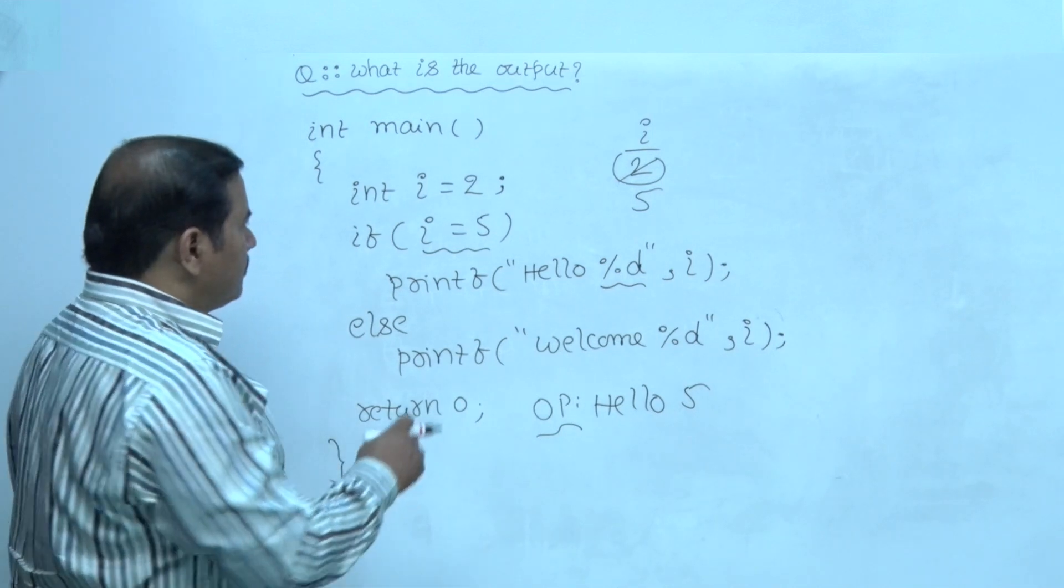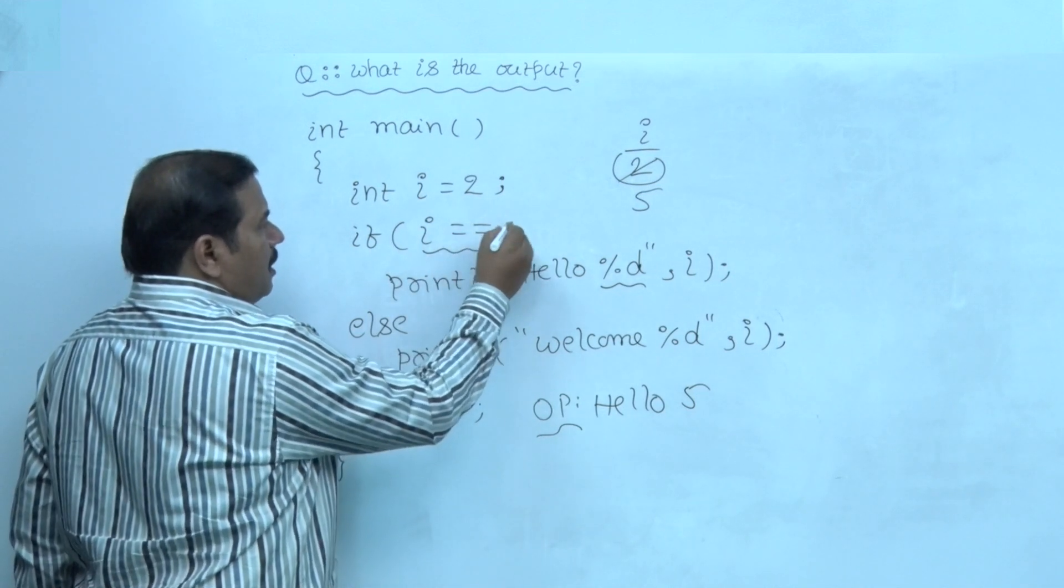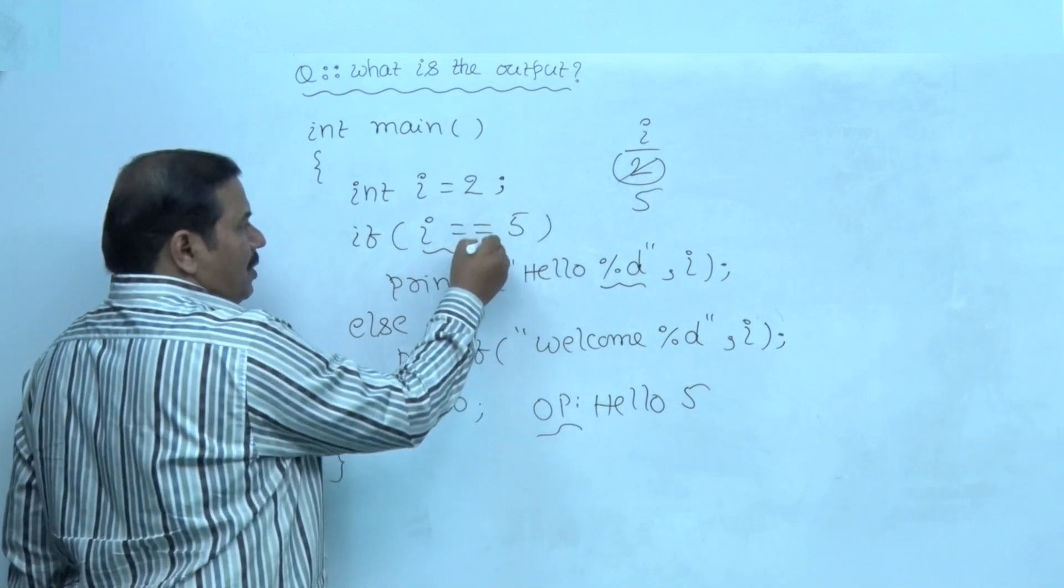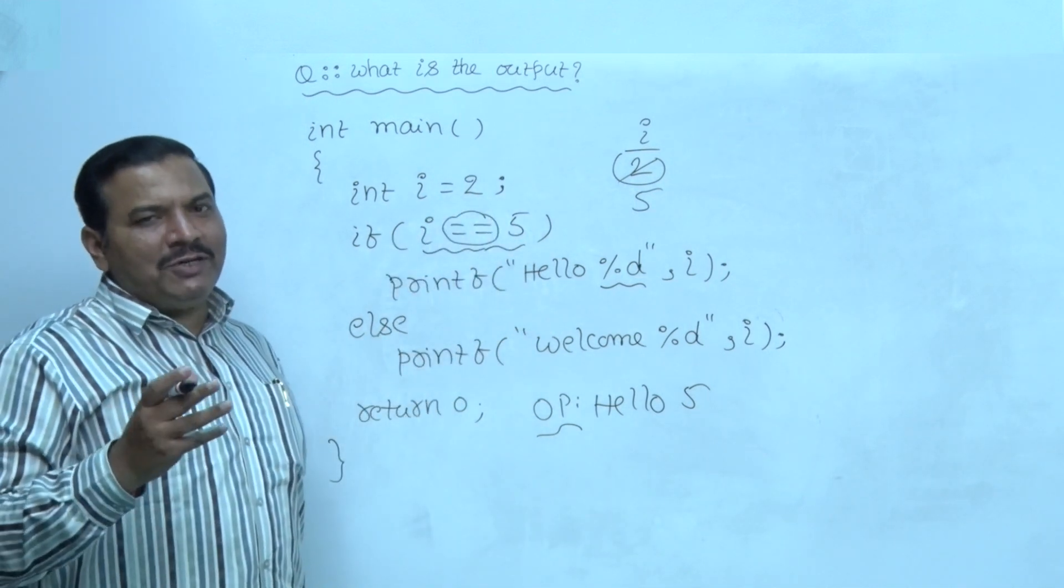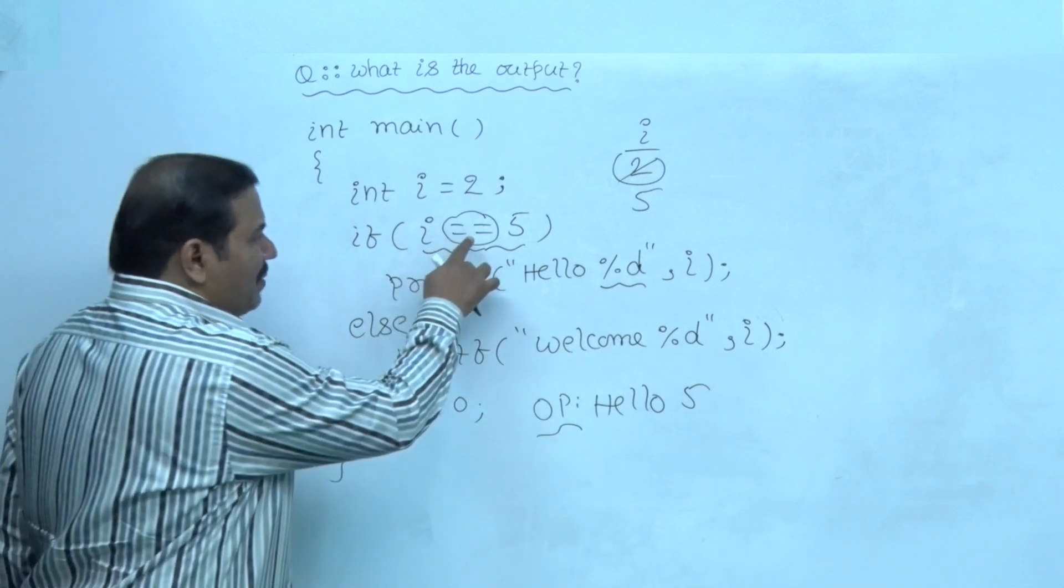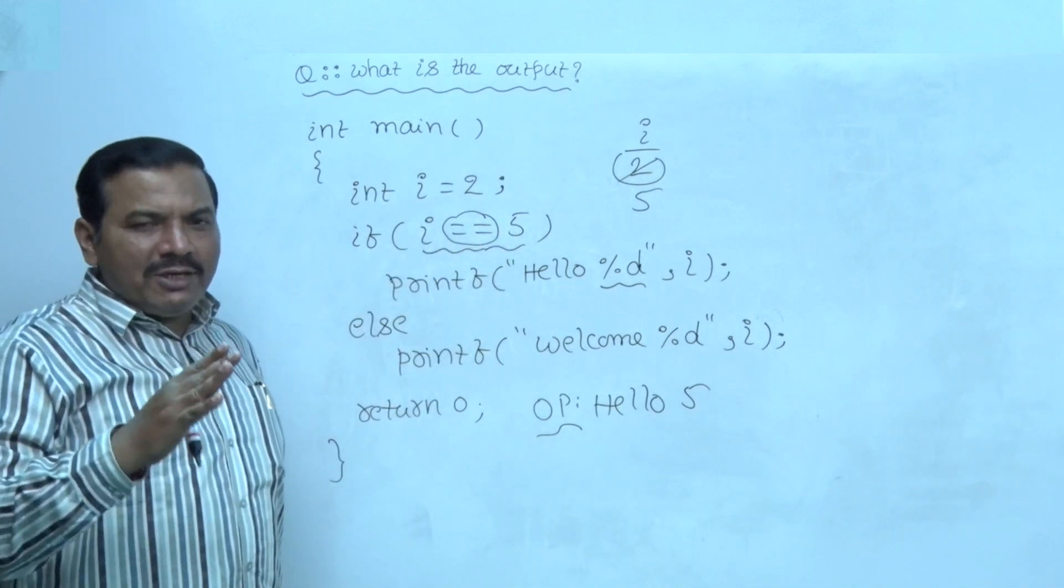For example, instead of single equal to, double equal to is used. Now, this is a relational operator is equal to. This operator compares the values of both operands i and 5.